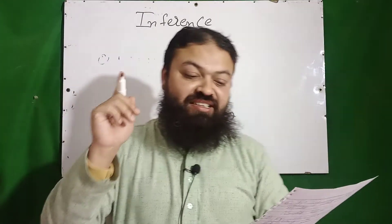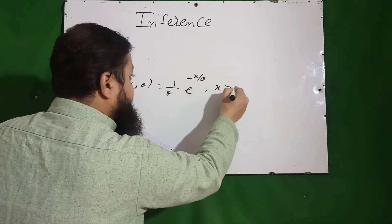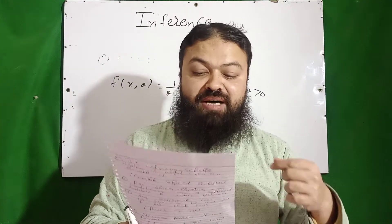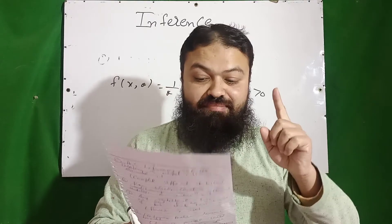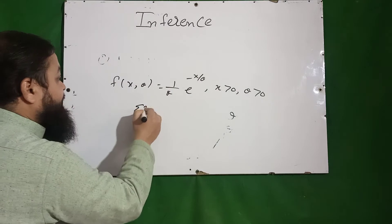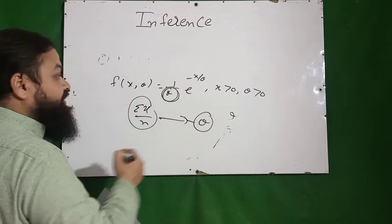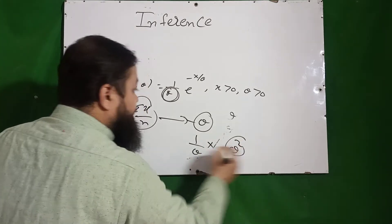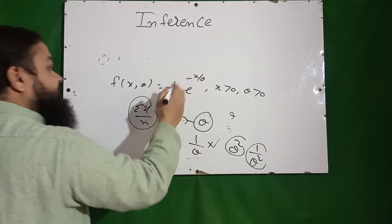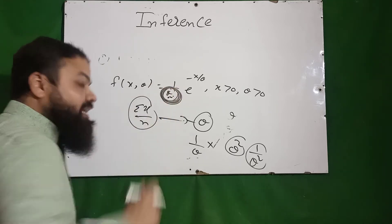Next, for the exponential distribution — which has only one parameter λ (or θ) — the PDF is f(x) = (1/θ)e^(−x/θ) for x > 0, θ > 0. The estimator Σx/n based on a sample of size n is an unbiased estimator of θ. It is not 1/θ, not θ², not 1/θ². Σx/n is the sample mean and is the unbiased estimator of the mean parameter θ. That is the correct answer in the exam.